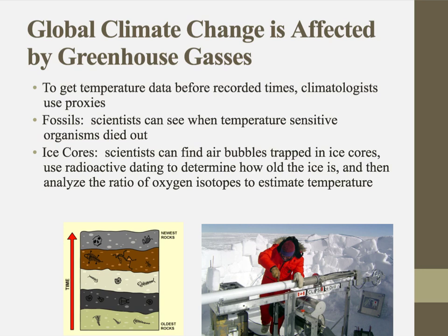We gather historical temperature data in two ways. First, using fossils: we can identify temperature-sensitive organisms in the fossil record. If we know their temperature range and when they died out, we can infer how much the temperature changed. These rock-and-fossil scientists know their stuff.